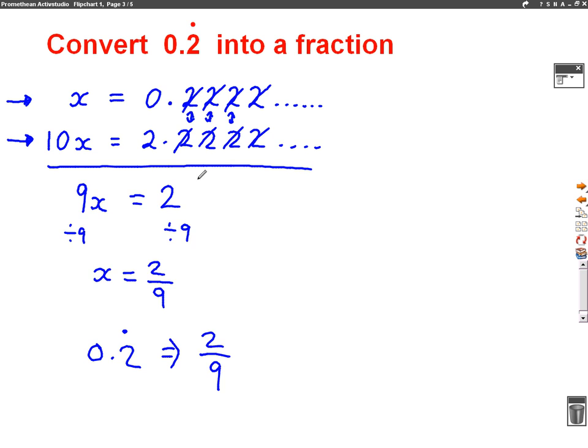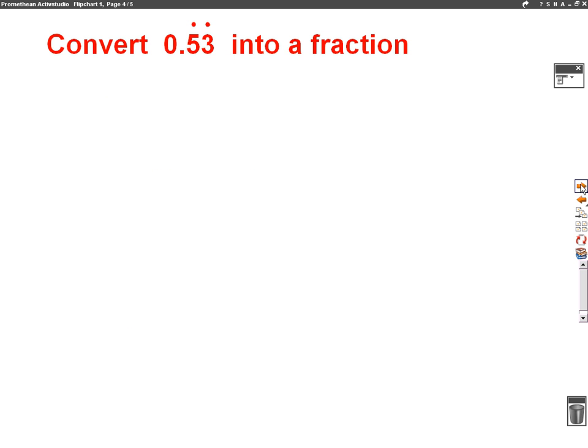Let's have a go at another one, a slightly harder one this time. So the question says, convert 0.53 recurring into a fraction. So the first thing I'm going to do is I'm going to write my 0.53. I'm going to write out a few parts of the decimals. So 0.53 recurring means 0.53, 5353, and that keeps going forever. So I call that x.